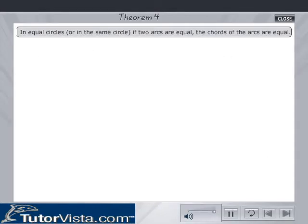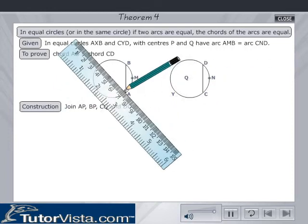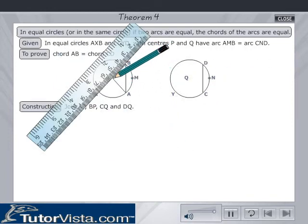Theorem: In equal circles, or in the same circle, if two arcs are equal, the chords of the arcs are equal. Given: In equal circles AXB and CYD, with centers P and Q respectively, arc AMB equals arc CND. To prove that chord AB equals chord CD. Construction: Join AP, BP, CQ, and DQ.